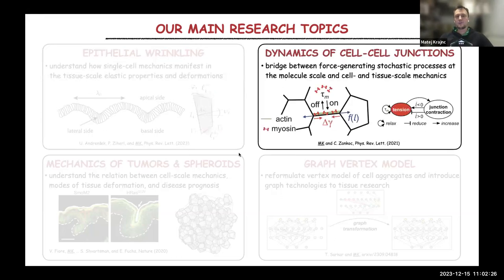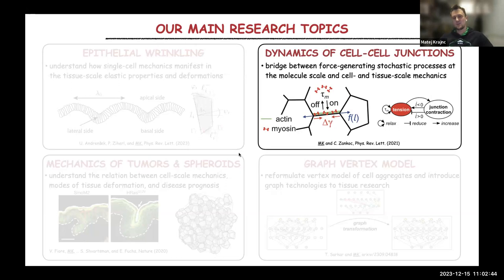Another topic we are also interested in is dynamics of cell-cell junctions. This is at the interface between a molecular scale, where you have force-generating stochastic processes in the actomyosin cell cortex, and then we couple these to the cell and tissue scale mechanics, which we usually describe by the vertex model. We are interested in this kind of feedback loops between these two scales.